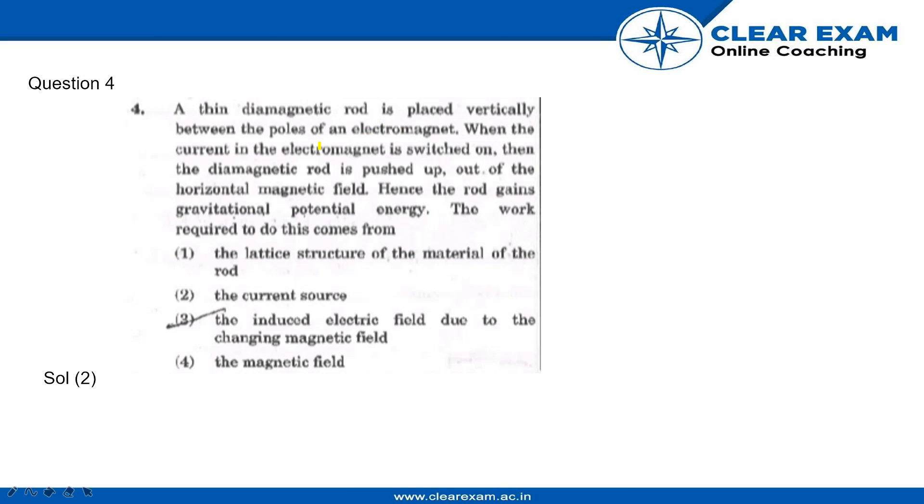A thin diamagnetic rod is placed vertically between the poles of an electromagnet. When the current of the electromagnet is switched on, the diamagnetic rod is pushed up out of the horizontal magnetic field. Hence, the rod gains gravitational potential energy.